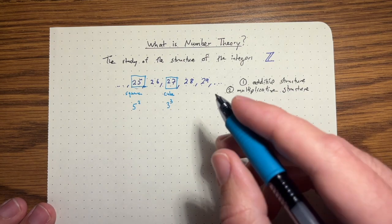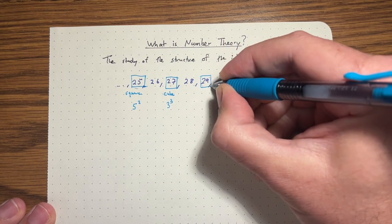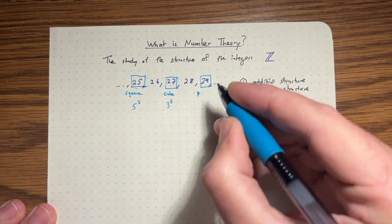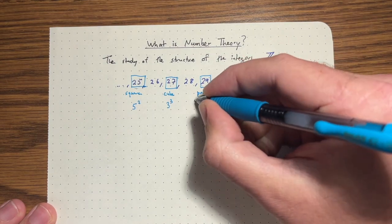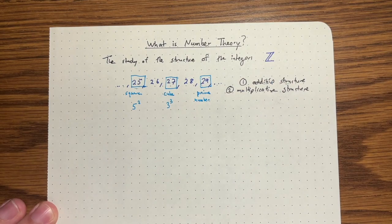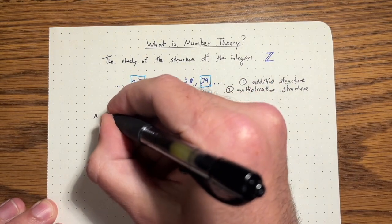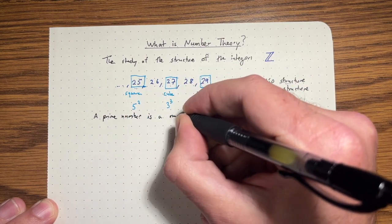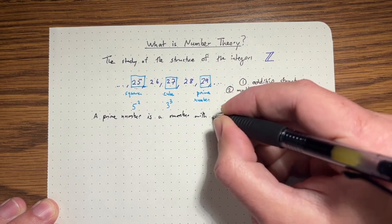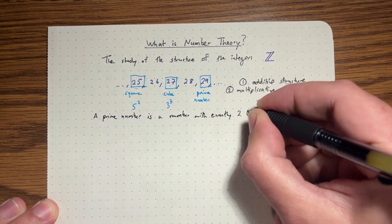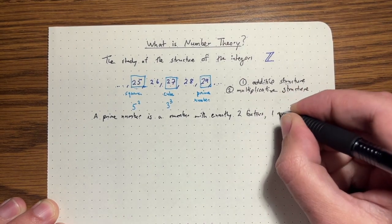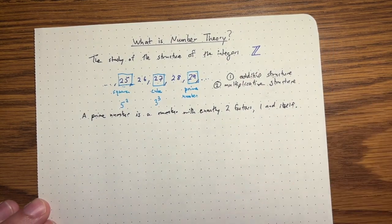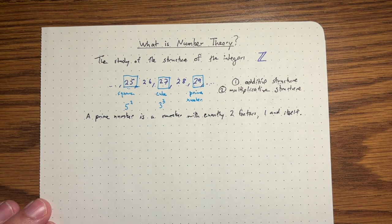And 29 is also rather interesting. It's an example of a number you can't break up at all multiplicatively. It's a prime number. And what is a prime number? A prime number is a number with exactly two factors. One and itself.